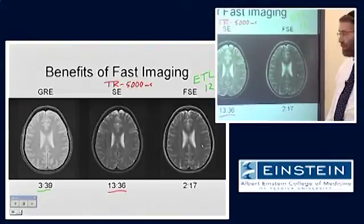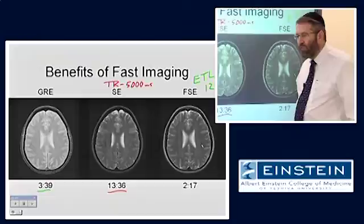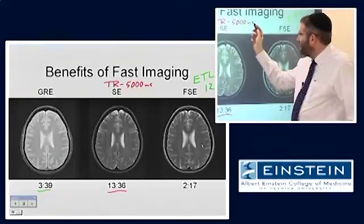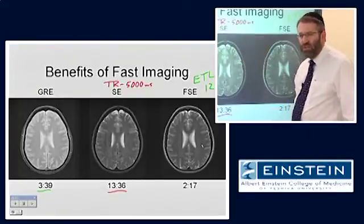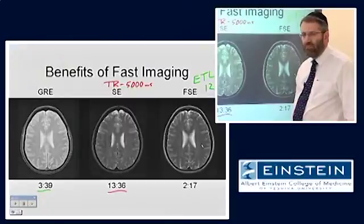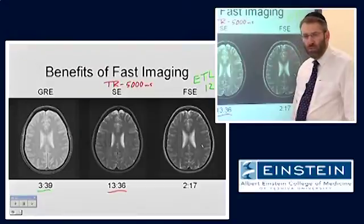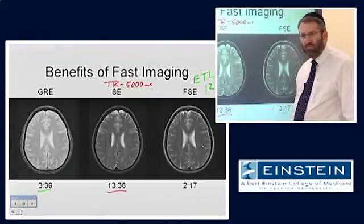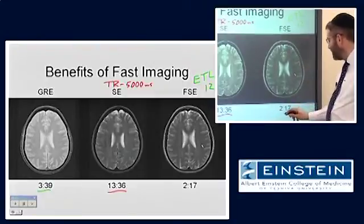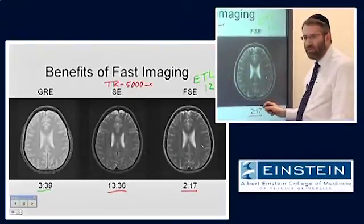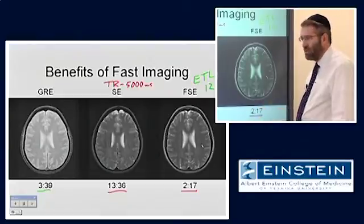We don't do spin-echo imaging. Even in the days before fast spin-echo — which is actually before my time — T2-weighted images were never acquired with a TR of 5 seconds because it just takes too long. But with fast spin-echo, we can get an image that has at least as good signal-to-noise, if not better, in dramatically less time.